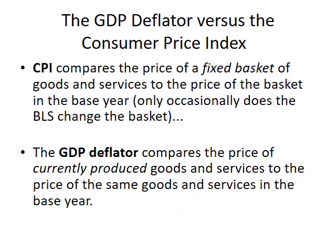The CPI compares the price of a fixed basket of goods and services to the price of that basket in the base year, and this basket only occasionally changes. The GDP deflator compares the price of currently produced goods and services to the price of the same goods and services in the base year. Both use a base year, and remember, the index for the base year — no matter what kind of index — is always 100.